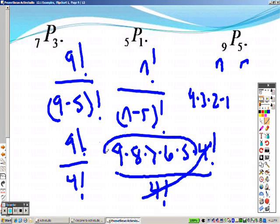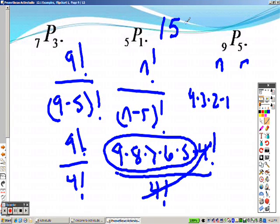So all I have left is 9 times 8 times 7 times 6 times 5. You end up getting the answer of 15,120.